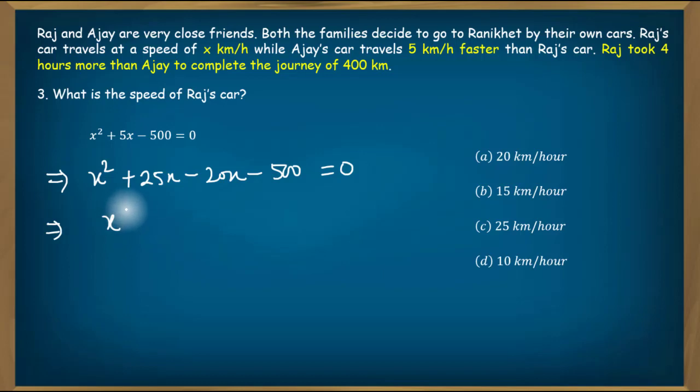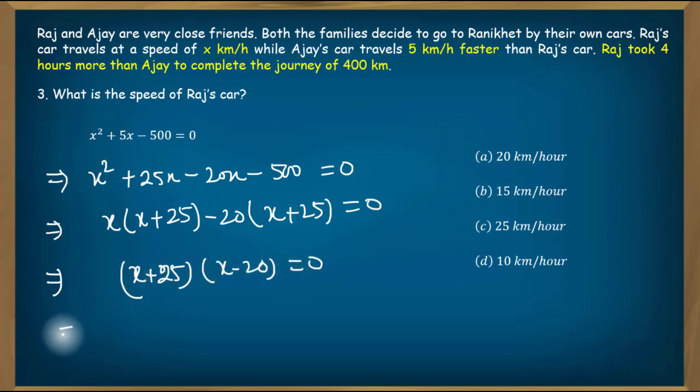Taking x common from the first two terms and minus 20 common from the last two terms: x into x plus 25 minus 20 into x plus 25 equals 0. So x plus 25 is common, giving us x minus 20 equals 0. This implies x equals negative 25 or 20. Negative 25 is not possible because speed cannot be negative. So x equals 20 km per hour.